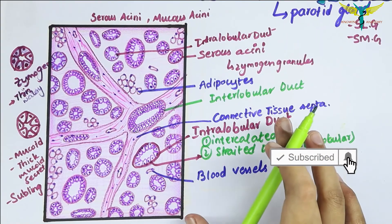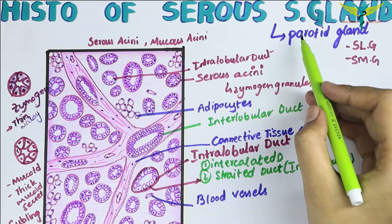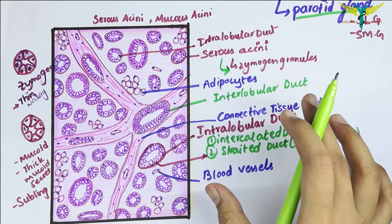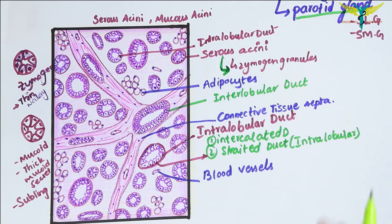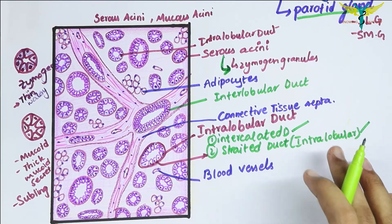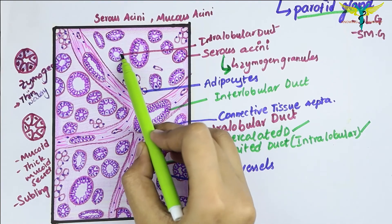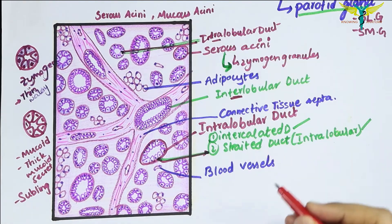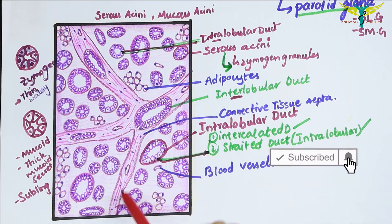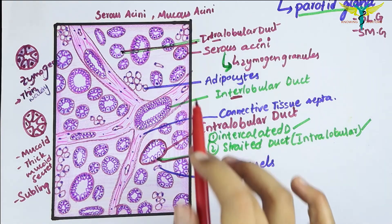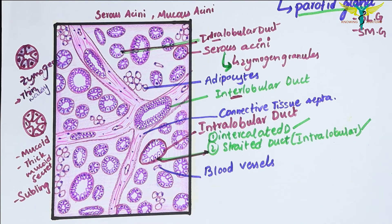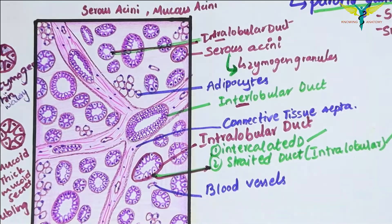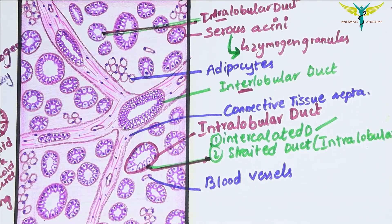To revise: the parotid gland is the serous type of salivary gland consisting mainly of serous acini stained dark due to basophilic zymogen granules. Intercalated and striated intralobular ducts are seen, as well as interlobular ducts. Do not confuse inter- and intralobular ducts — interlobular ducts are present in the connective tissue septa, while intralobular ducts are present within the lobules. Blood vessels, adipocytes, and connective tissue septa dividing the gland into lobules are also noted.